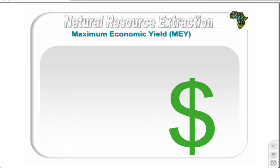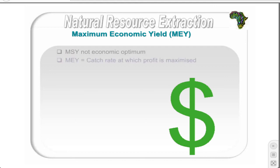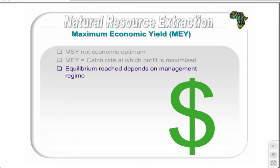The MSY, while perhaps optimal from a biological point of view, is not necessarily optimal from an economic point of view. The maximum sustainable yield must be distinguished from the maximum economic yield, MEY, which is the catch rate at which profit is maximized. Unlike the MSY, which depends only on the natural growth rates of the population, the MEY depends on market conditions — the costs associated with fishing and the prices obtainable from selling each unit of fish. Whether the actual equilibrium will be at the economic optimum depends on the management regime, that is, whether the resource is under open access or private ownership.